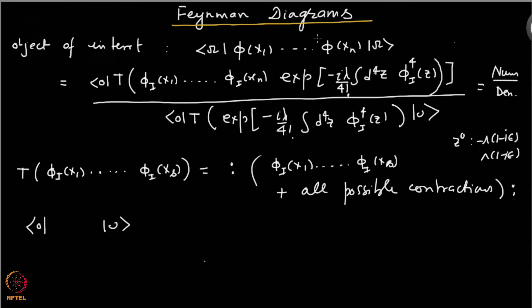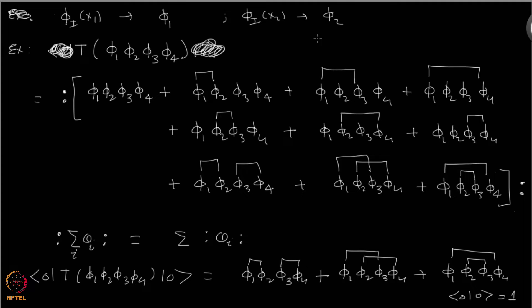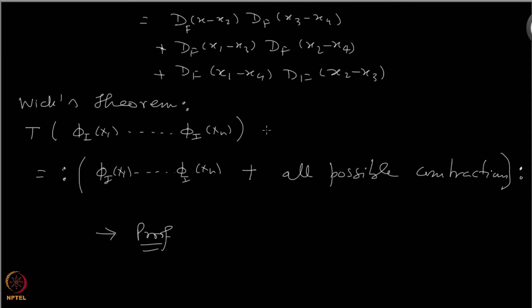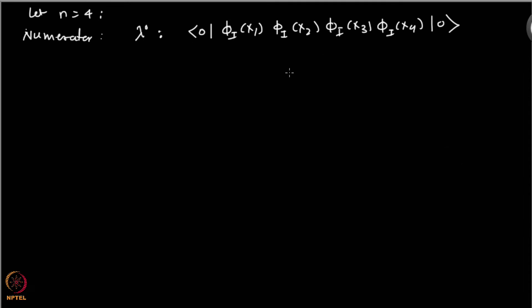We have calculated this already. Here you see phi(x₁), phi(x₂) — these are just phi_i at x₁, x₂ and so forth — and sandwiched between vacuum states, only those terms survive in which all the phi's are contracted; there is no phi which is uncontracted. The ones which were uncontracted killed the vacuum. Only these three survived and these three we wrote in terms of the Feynman propagators. So we have exactly three terms. That is what we are looking at again.